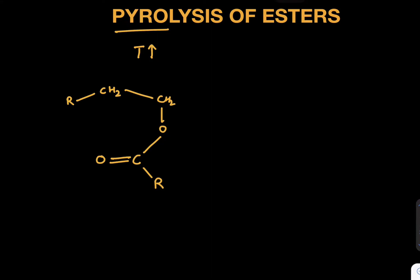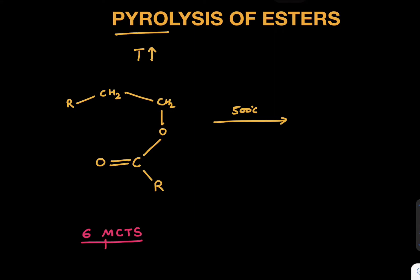Now there are some important things to keep in mind. These esters are heated at very high temperature, around 500 degrees Celsius. This kind of reaction occurs via 6-member cyclic transition state, which we call 6-MCTS - member, cyclic, transition state.